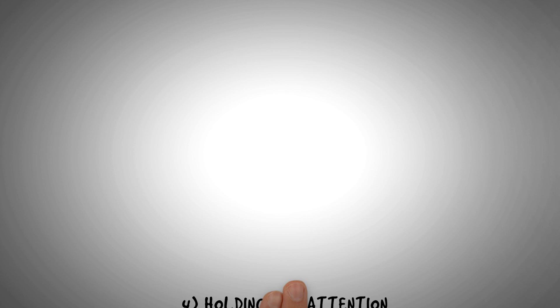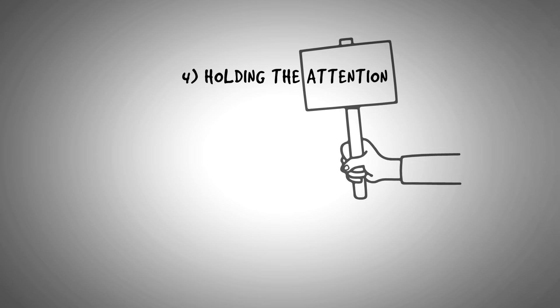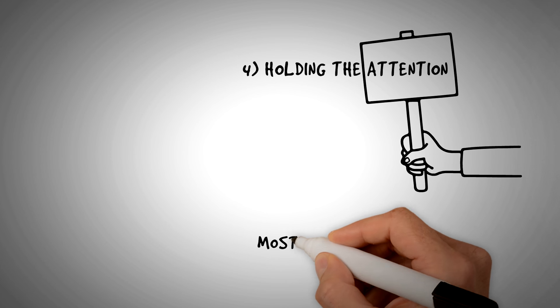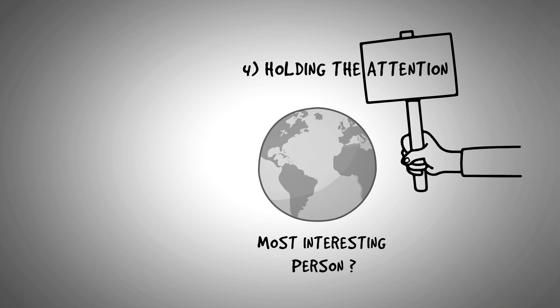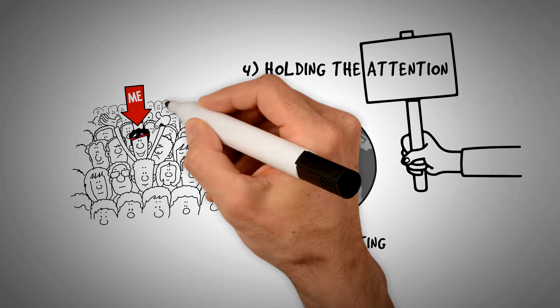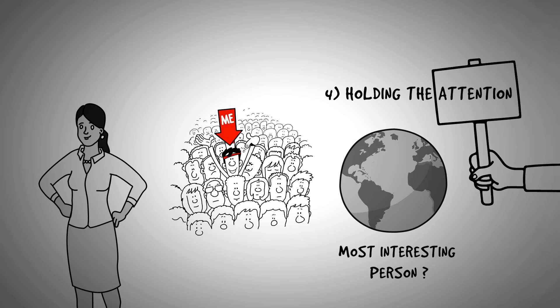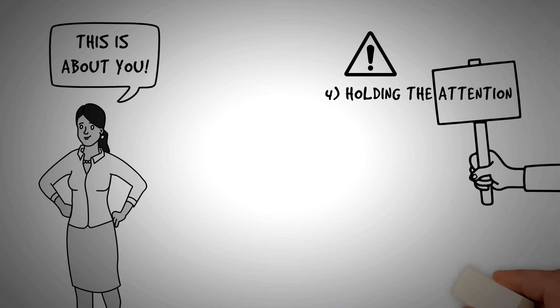Tactic number four is holding the attention. Once you've grabbed the valuable attention, how can you hold it? By using the most interesting person in the world for everyone, themselves. Making a conversation about the other person by using you instead of people or they will make them pay attention. Or talking about their qualities and their characteristics.